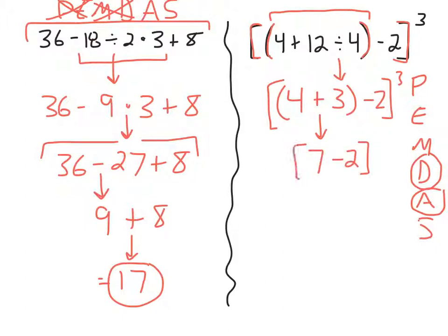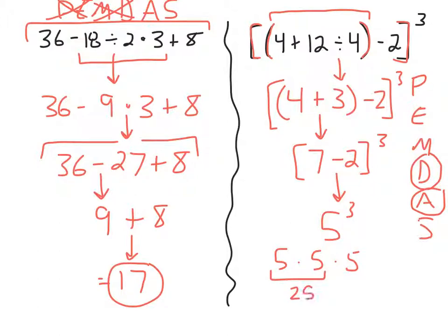The brackets are still there because the last thing I'm going to do is raise whatever I get out of the bracket to the third power using the exponent 3. All I'm left with inside the bracket is subtraction, so it's 5 to the third power. An exponent means 5 times itself 3 times — so it's 5 times 5 times 5, not 5 times 3. 5 times 5 is 25, and 25 times 5 is 125.